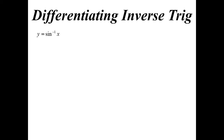Let's look at differentiating the inverse trig functions. So y equals the inverse sine of x. How am I going to find out this one's derivative? We already know how to differentiate just the regular sine of x. So if I rewrite this and make x the subject, then x becomes sine y.